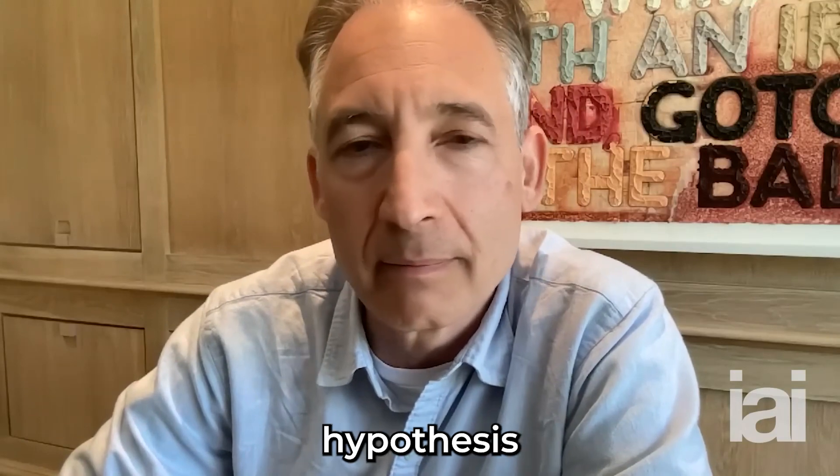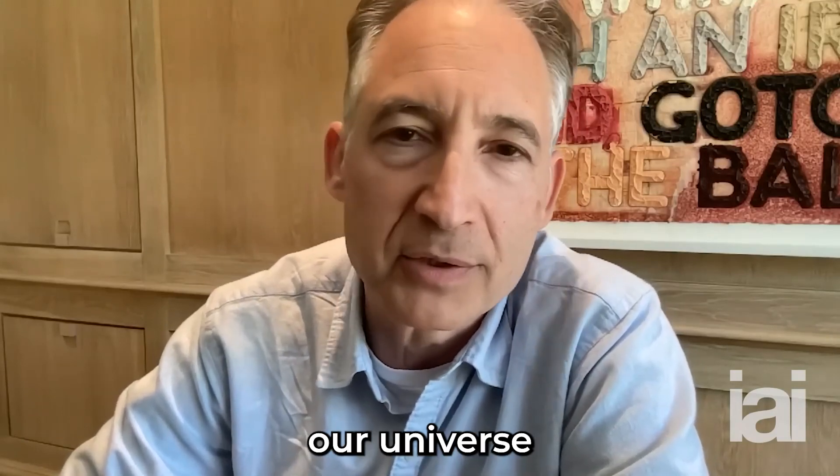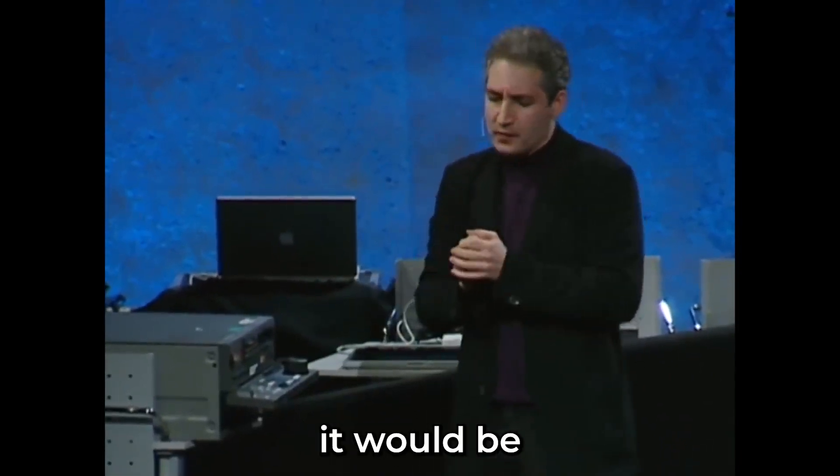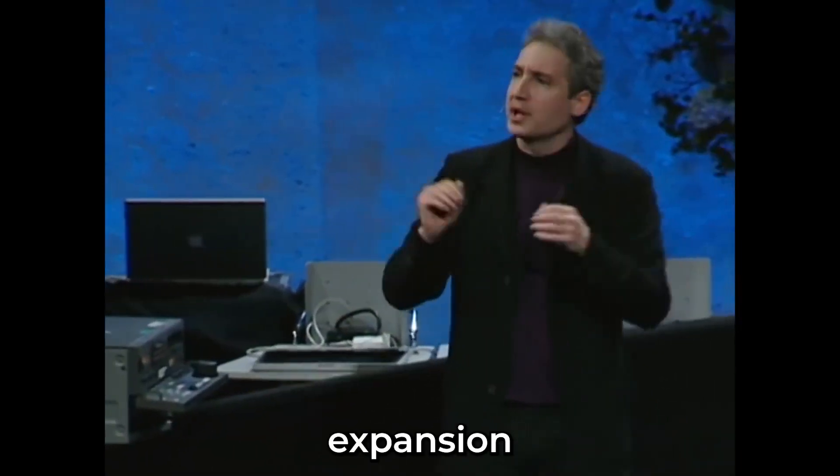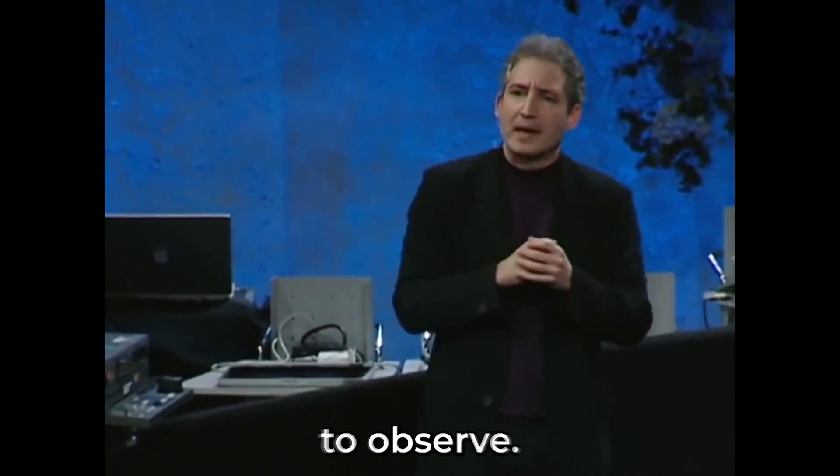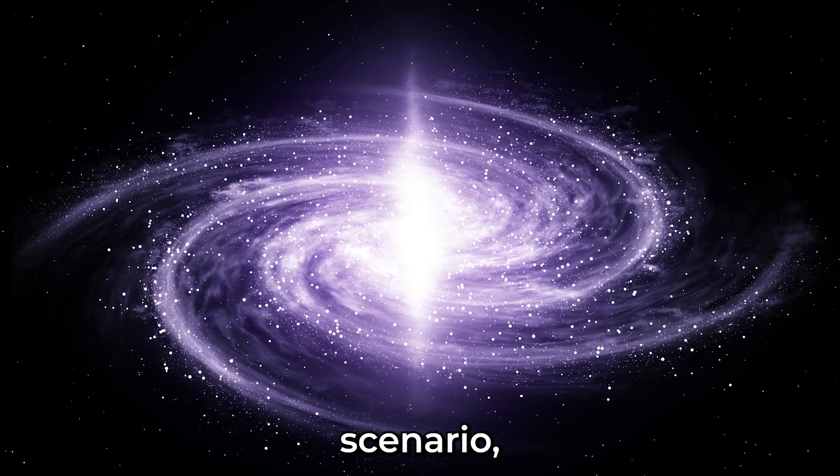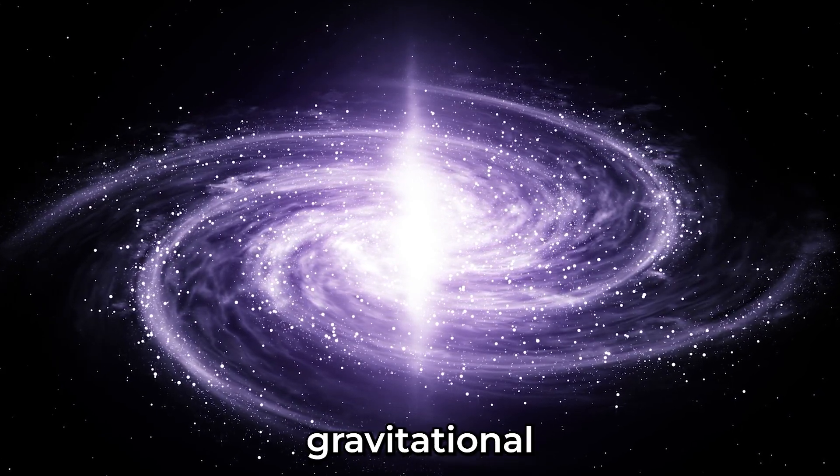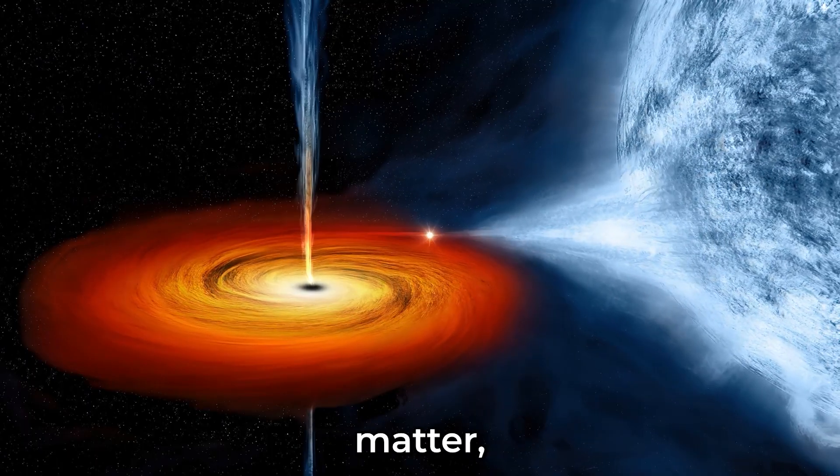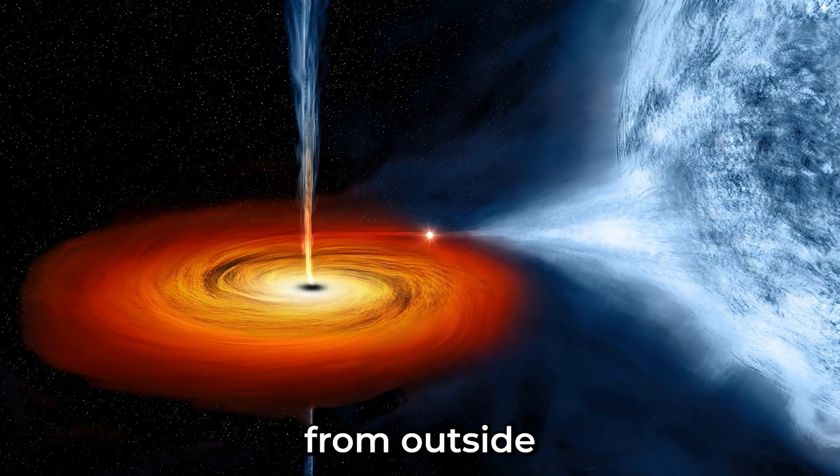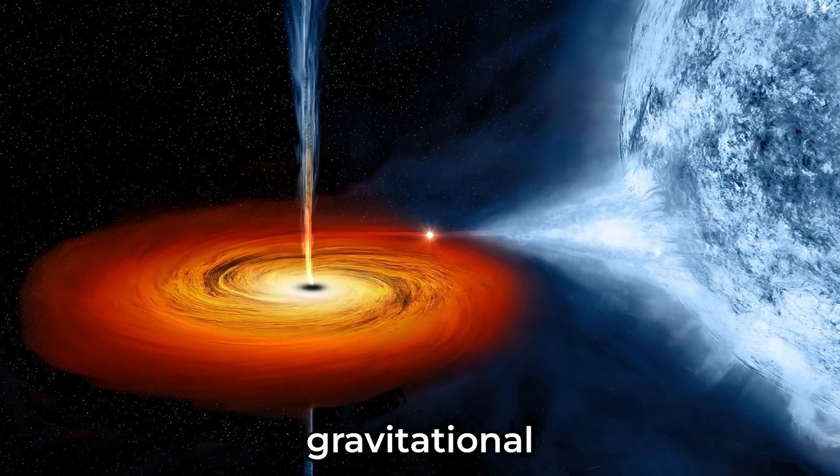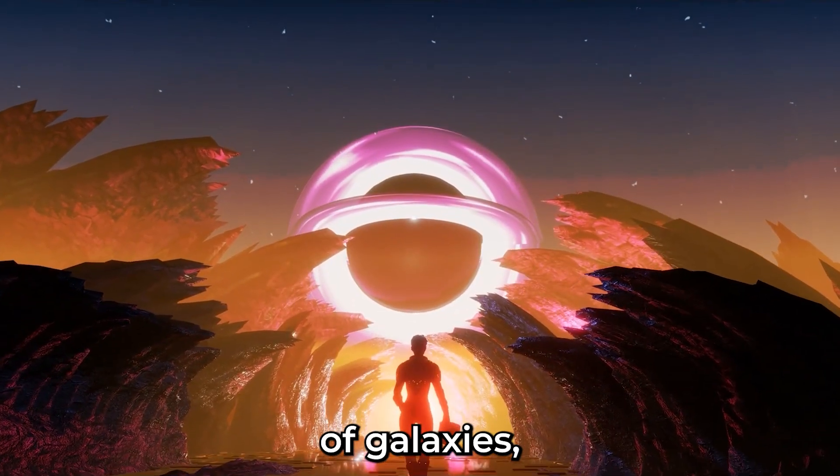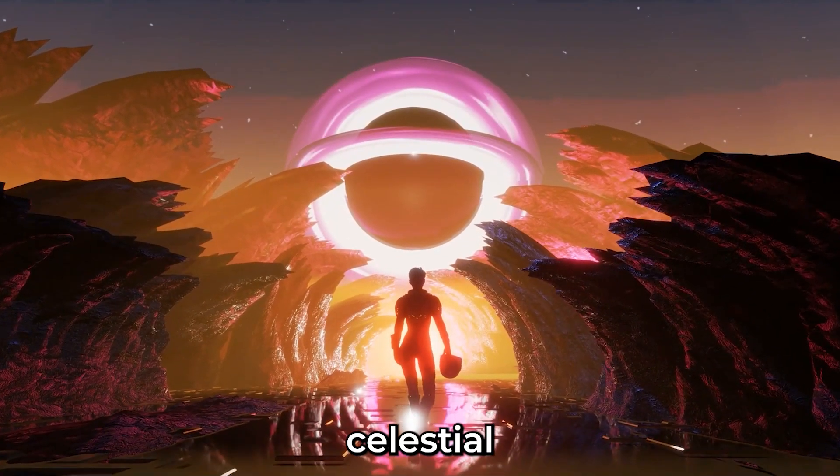Greene's hypothesis suggests that if our universe were inside a black hole, the gravitational forces acting within it would be responsible for the expansion and structure we are able to observe. In this scenario, the universe's expansion could be attributed to the gravitational force exerted by matter falling into the black hole from outside regions. The gravitational collapse of matter could also account for the formation of galaxies, stars, and other celestial structures.